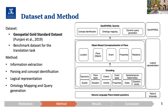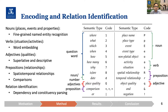During this study, we used a geospatial gold standard dataset provided by Punjani et al. We used their knowledge base as well, but extended it with the OpenStreetMap dataset. In the first encoding part and relation identification, we mainly use pre-trained models for part-of-speech tagging and fine-grained named entity recognition to understand what is presented inside the question. The table shows how the parts of speech are related to the information units we want to extract.